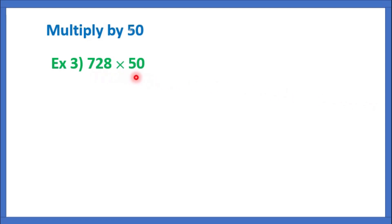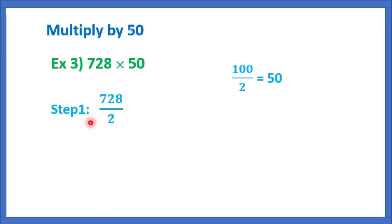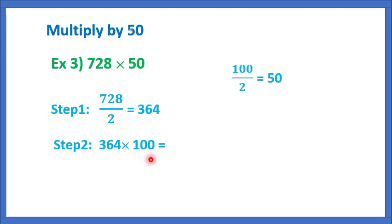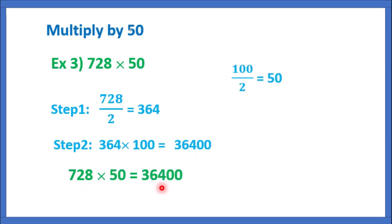Multiply by 50. Example 3: 728 into 50. 50 is nothing but 100 by 2. So first we should divide by 2. That is equal to 728 by 2 is equal to 364. Now, we should multiply with 100. That is equal to 364 into 100. We should put 2 zeros after 364. That is equal to 36,400. This is our final answer. So, 728 into 50 is equal to 36,400.